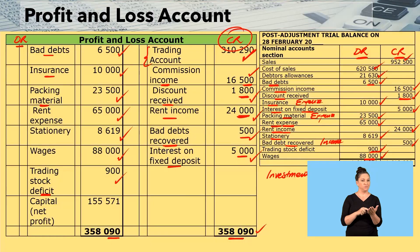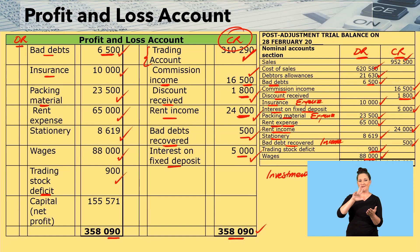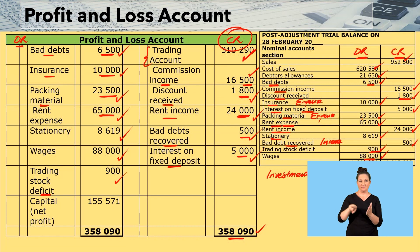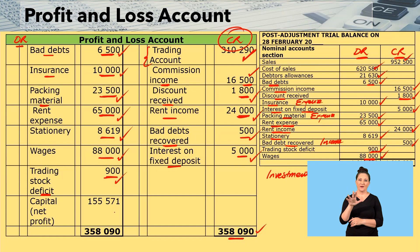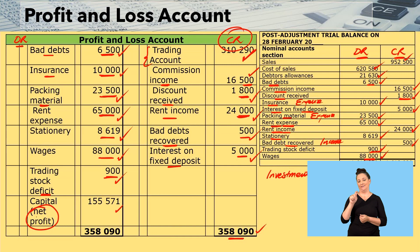Now keep $358,090 on your calculator, then subtract: minus $6,500, minus $10,000, minus $23,500, minus $65,000, minus $8,619, minus $88,000, minus $900. Press the equal sign — you get $155,571, and that is what we call net profit.